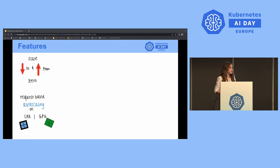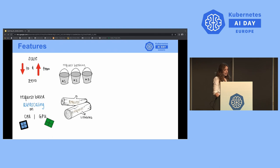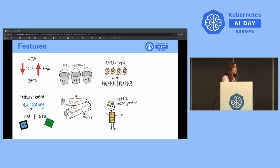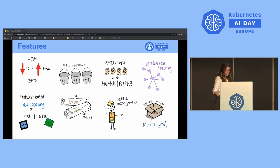Here are some of the main features of KServe. It allows you to scale up and down from zero, with request-based auto-scaling based on your CPU or GPU. It also offers request batching, request and response logging, security with authentication and authorization, traffic management, distributed tracing, out-of-the-box metrics, and rollout strategies like canary rollout, which I'll do a little demo on later.